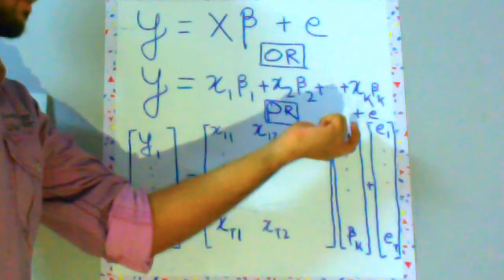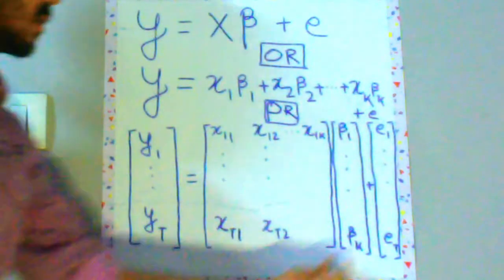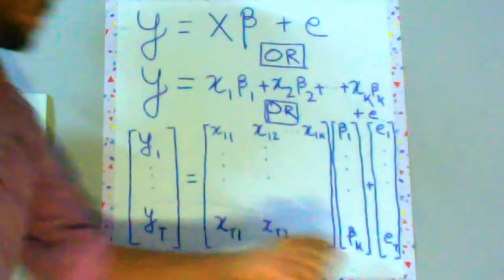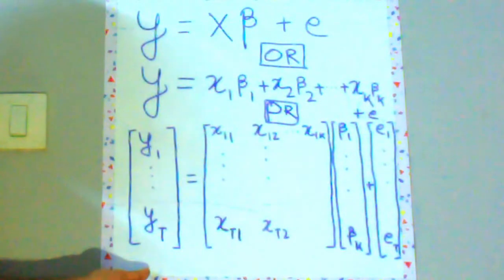And kth column will be your k minus 1th predictor or the last predictor. And multiply this design matrix or capital X with beta. This beta is over here.